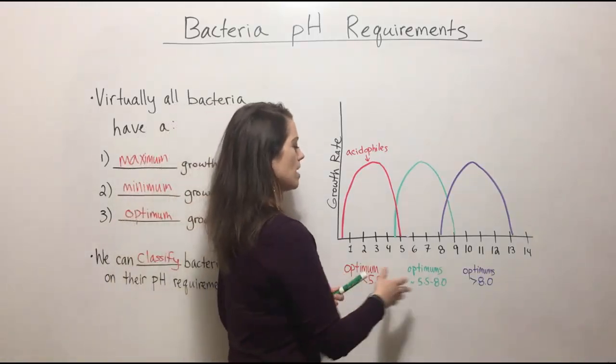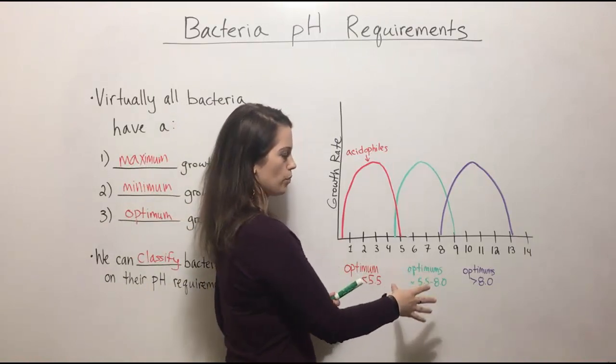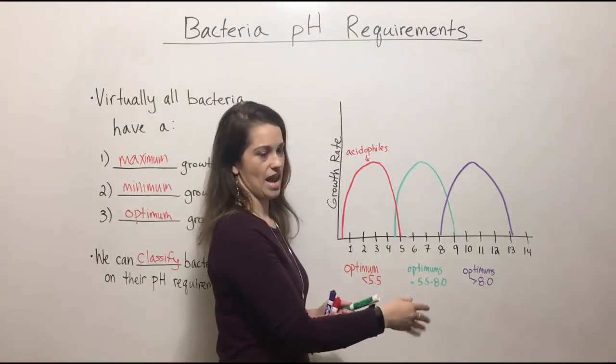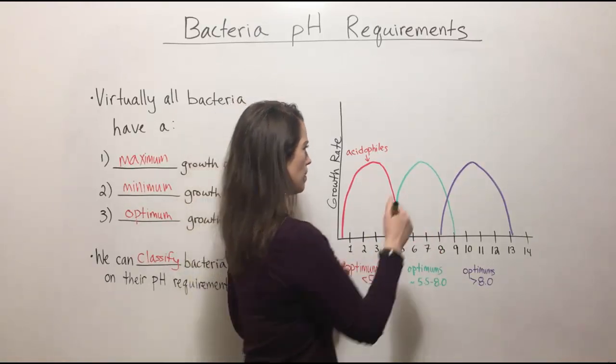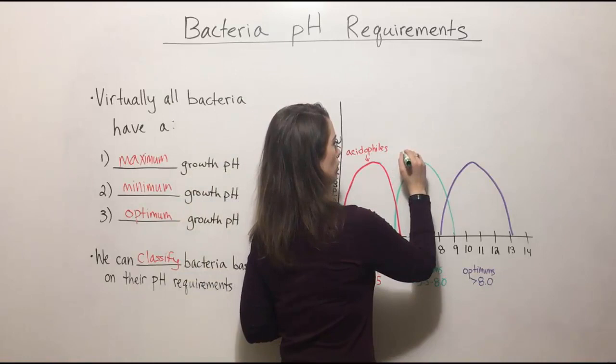The next group are the ones that have optimum growth pHs between 5.5 and 8, so right around that pH of 7 that's neutral. So these are bacteria that we call neutrophiles.